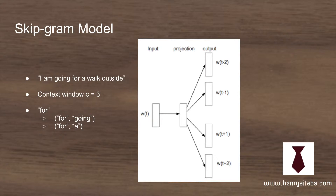Deep learning is where you take an input, pass it through a series of complex functions, and produce some kind of output. The complex functions learn some kind of semantic space, and this is useful for representing words.